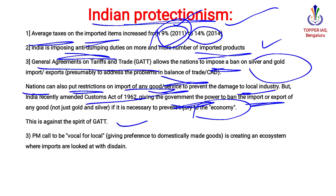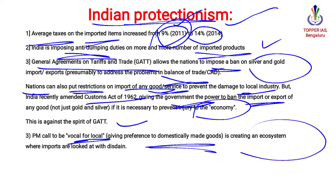However, this amendment is against the spirit of GATT. The Prime Minister's call for 'Vocal for Local' and 'Local for Local' gives preference to domestically made goods, creating an ecosystem where imports are restricted.